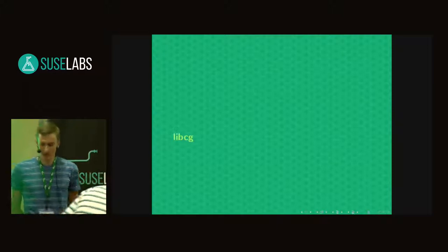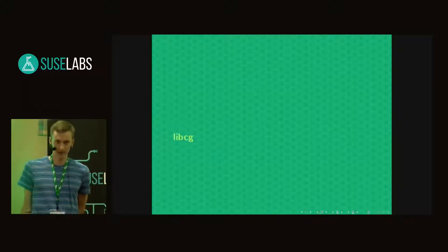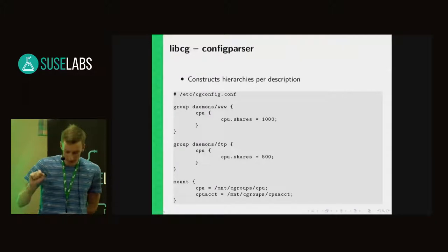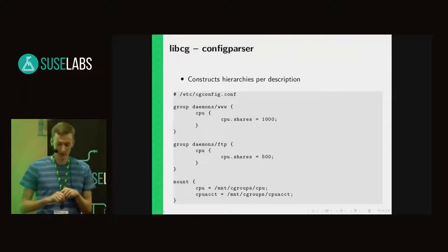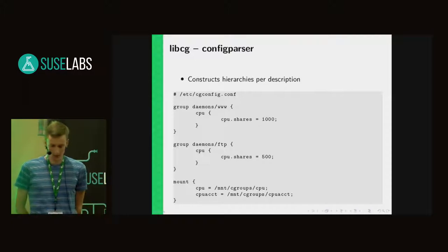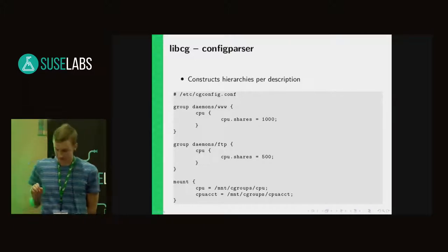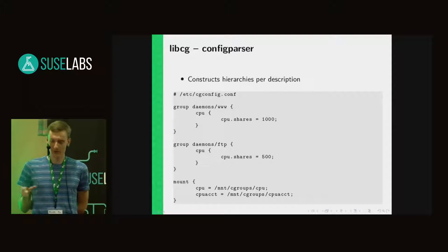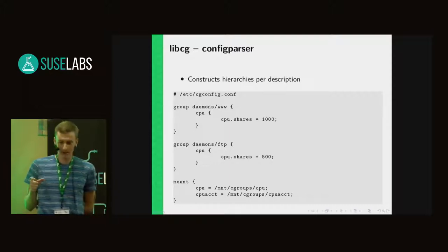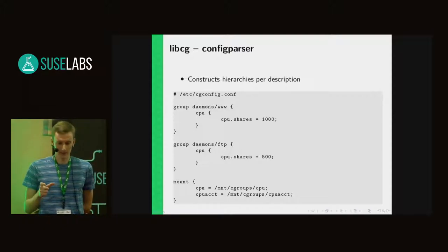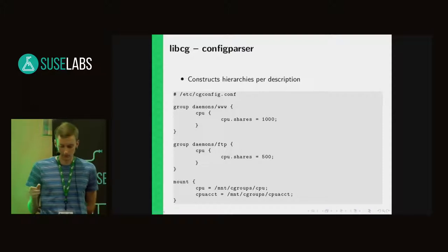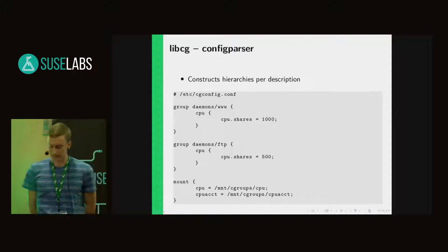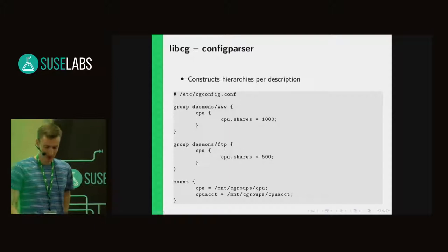Now let's mention libcg. libcg is a project that consists of several components. I will mention the two most important ones. The first one is the cgconfig parser, which allows the user to define the structure of cgroups and then attach controllers to these hierarchies, to these defined structures. It also ensures that the hierarchies are mounted in the desired path in the file system. So this defines the structure of the groups.